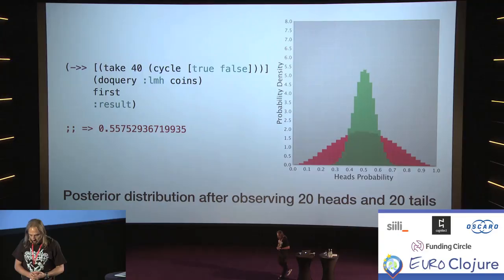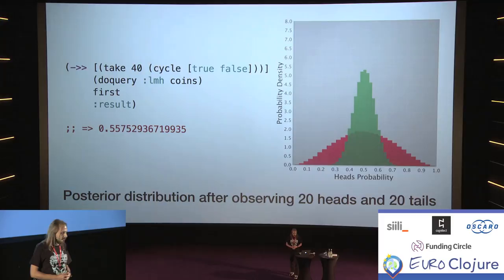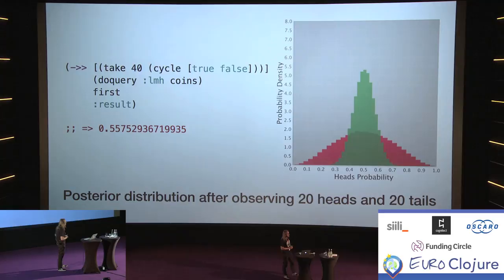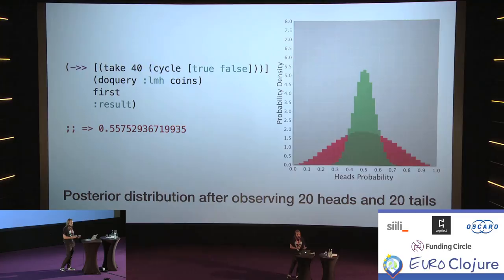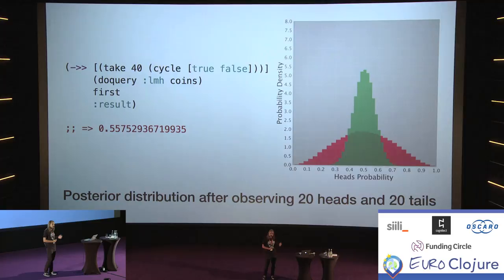We're not interested in the return value of observe — it's just changing internal state. Then last, we return p: the probability of the coin to show heads. To run it, we use the doquery function. First we define our observations — 40 coin tosses with half true and half false. doquery takes a keyword identifying the inference algorithm, the query, and our observations. It returns a lazy sequence; taking the first value shows a result map with a sample drawn of 0.56. If you take enough samples, you end up with the posterior distribution — the green distribution we've already seen.